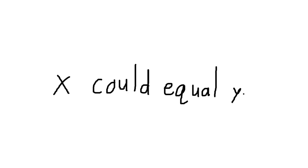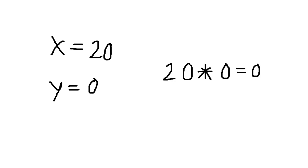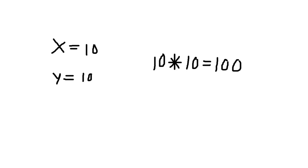They could be the same if you'd like. You may notice that 20 times 0 equals 0, and that's when the two numbers are as far away as possible. What if they're as close together as possible? 10 times 10 equals 100.